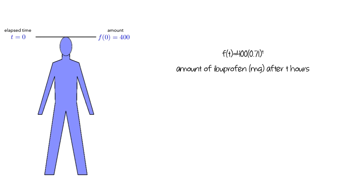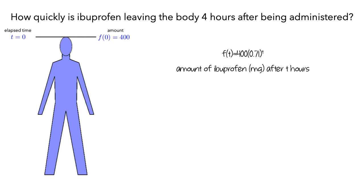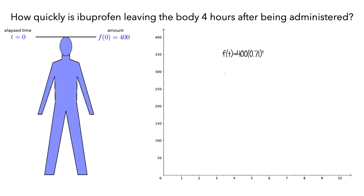A question we might be interested in is: how quickly is ibuprofen leaving the body 4 hours after being administered? To help us think about the scenario, let's make a graph of our function. We'll have the horizontal axis be the elapsed time in hours since the ibuprofen was administered, and the vertical axis be the amount of ibuprofen in milligrams.